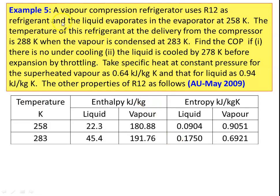Example 5. The vapor compression refrigerator uses R12 as the refrigerant, and the liquid evaporates in the evaporator at 258 Kelvin. The temperature of the refrigerant at delivery of the compressor is 288 Kelvin, when the vapor is condensed at 283 Kelvin. Find the COP if: sub-question 1, there is no undercooling; sub-question 2, the liquid is cooled to 278 Kelvin before expansion by throttling. Specific heat at constant pressure for superheated vapor is 0.64 kJ/kg·K, and for liquid is 0.94 kJ/kg·K. Other properties of R12 are given in the table. This is from the university question paper May 2009.